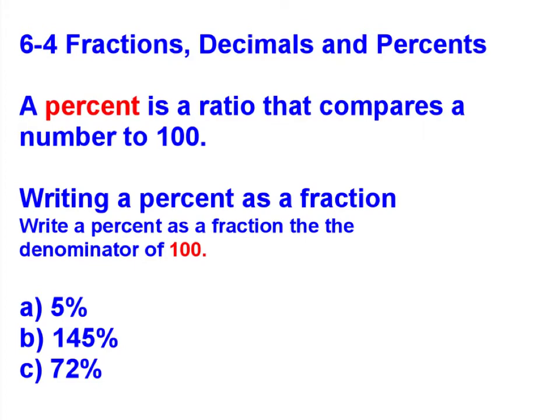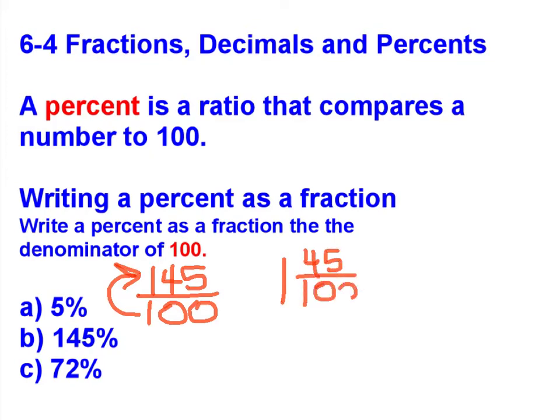Let's try the next one. We are going to try to turn 145% into a fraction. So I know I will have 145, a percent is always out of a hundred. Wow, this is an improper fraction. So I know that 100 goes into 145 one whole time. After 100 goes into 145 one whole time, I have 45 left over out of 100.